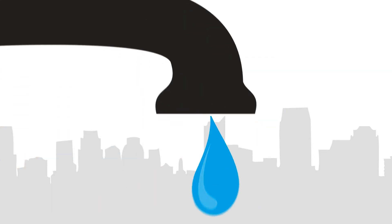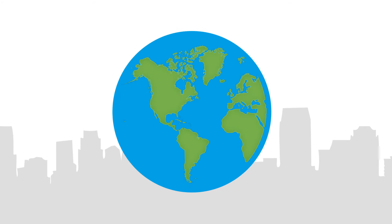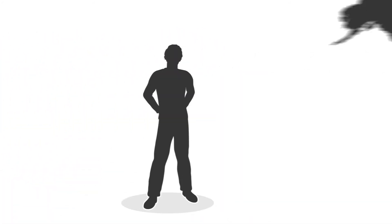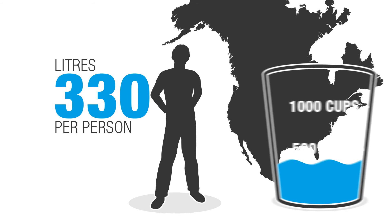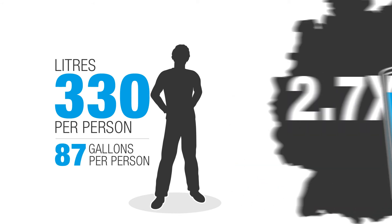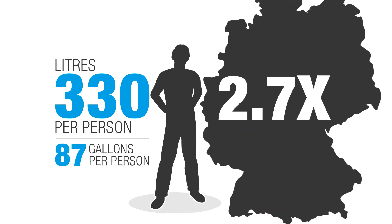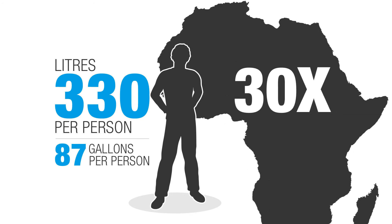Water consumption is one way we impact our watershed. How much water do you think North Americans use in one day per person? About 330 liters or 87 gallons per person a day. That's 2.7 times more than people in Germany, and almost 30 times more than people in Africa.